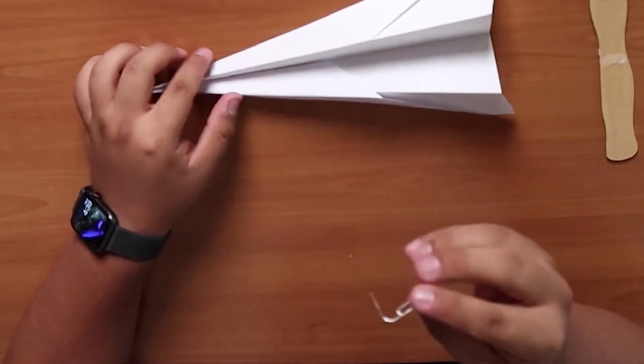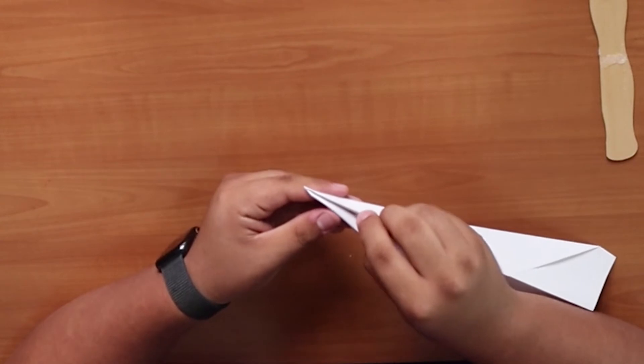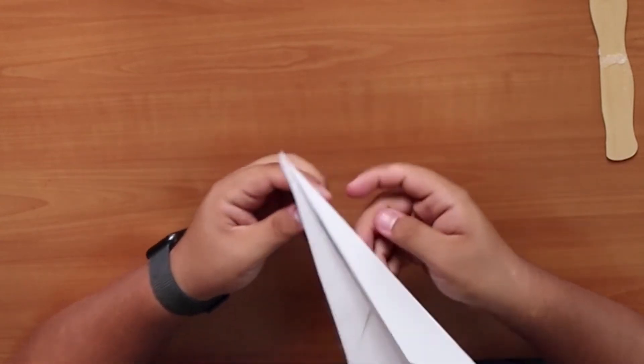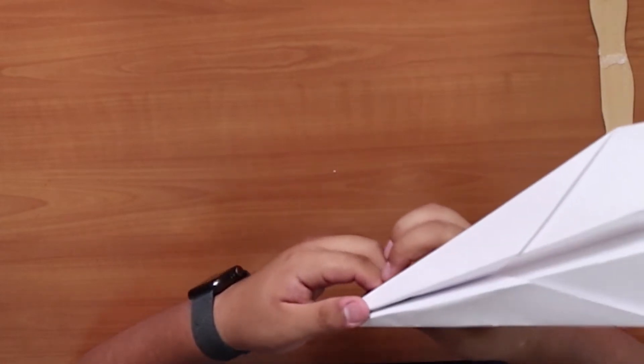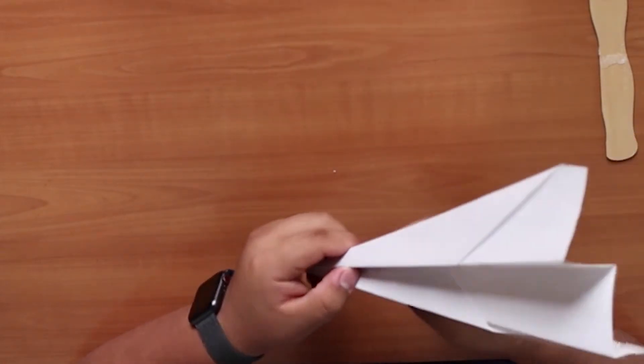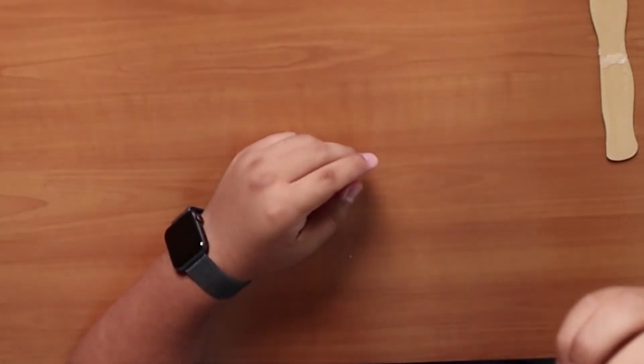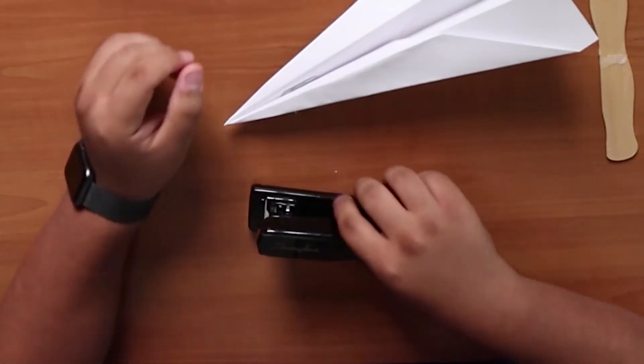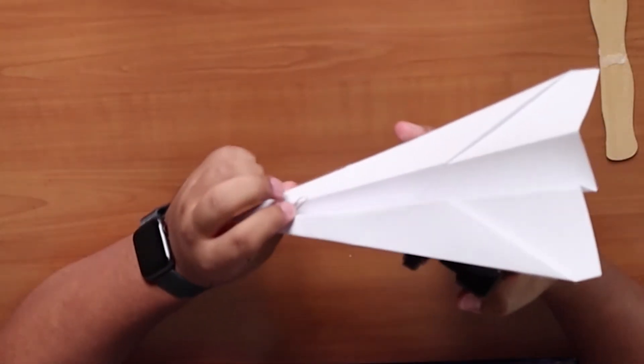Next, grab our paper airplane and insert the end of the paper clip in between the middle crease of the paper airplane. The paper clip should be inserted towards the nose of the airplane. If done correctly, the rest of the paper clip should be facing the back end of the paper airplane. Staple the portion of the paper clip that lays inside the airplane.